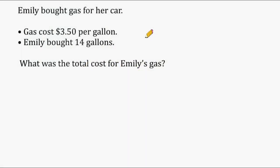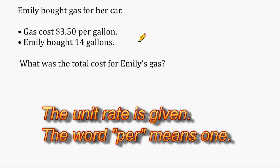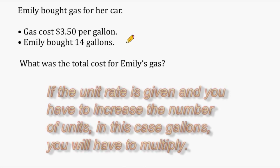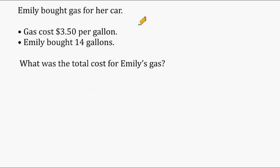In this problem we're going to practice decimal multiplication. After reading the problem, how do we know it's a multiplication problem? Emily brought gas for her car and the gasoline costs three dollars and fifty cents per gallon. She bought 14 gallons and we need to figure out the total cost. Because it's $3.50 for one gallon and she's purchasing more than one gallon, this is a multiplication problem — $3.50 multiplied by 14.